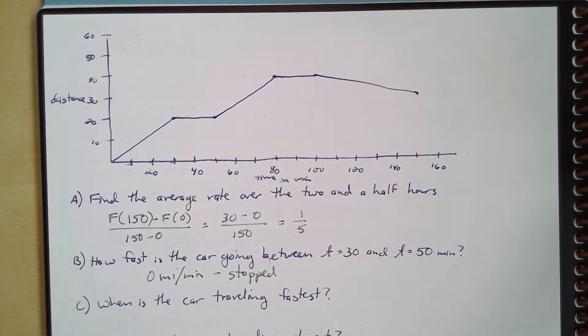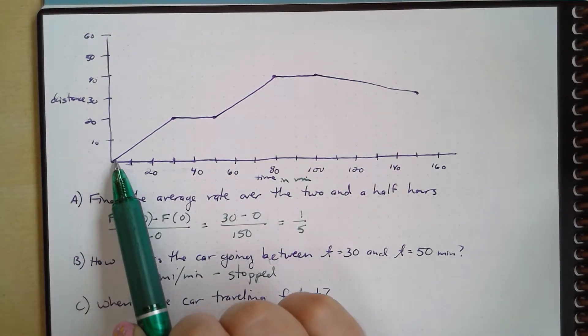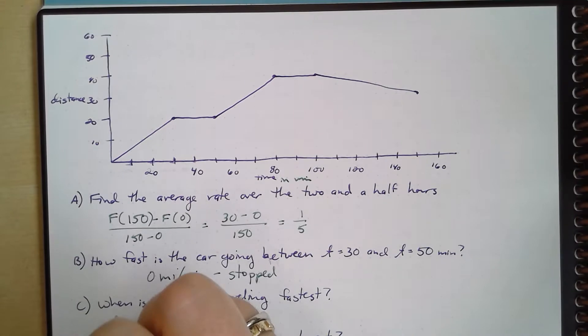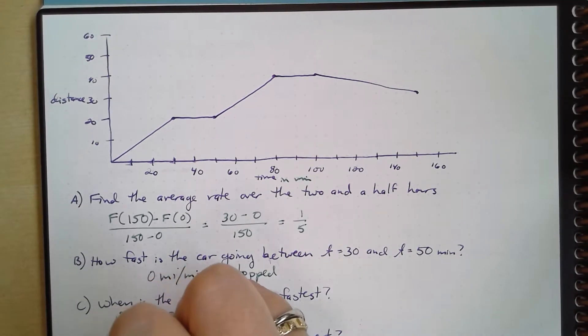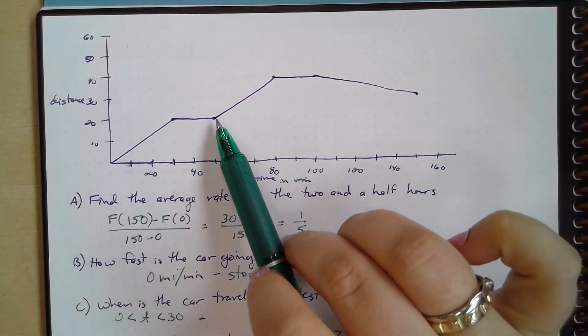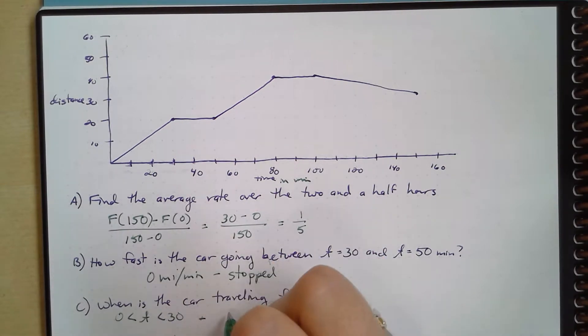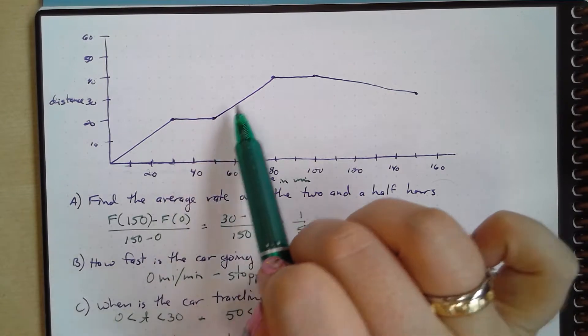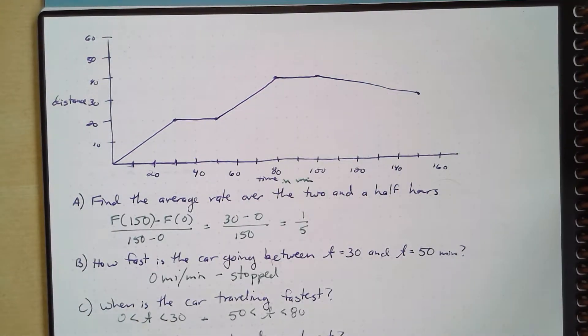When is the car traveling fastest? Well, it's going to be traveling fastest when we have our steepest slope, which to me looks like between 0 and 30. So when 0 is less than t is less than 30, and then again between 50 and 80, when 50 is less than t is less than 80. These look to me to have the same slope here. And if we calculated that, we would find that it does.